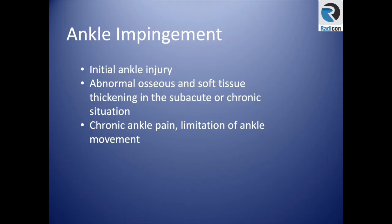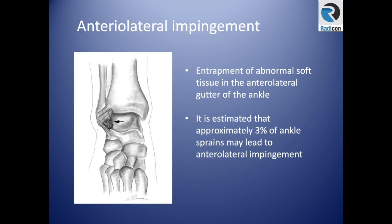Ankle impingement is usually a result from a previous ankle injury. It involves abnormal osseous and soft tissue thickening in the subacute or chronic situation and can cause chronic ankle pain. The anterior lateral impingement is the most common type, usually resulting from entrapment of soft tissue in the anterior lateral gutter. A thickened or scarred ligament in that region leads to soft tissue entrapment, causing chronic impingement and friction following a sprain.